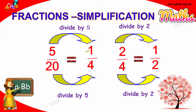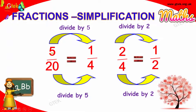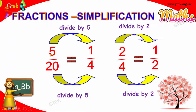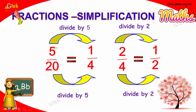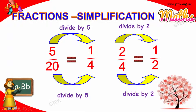Let's see a small simplification in fractions. Five divided by twenty — which number is common to both? Five is divided by five and twenty is also divided by five. Five divided by five is one, and twenty divided by five is four. So, dividing both by five, you get one by four.